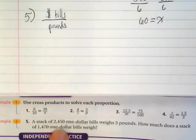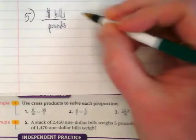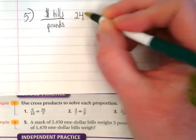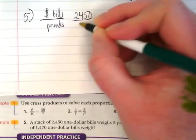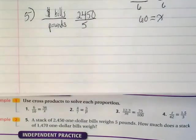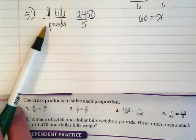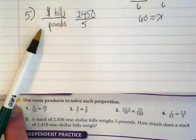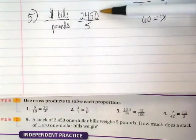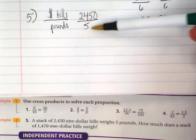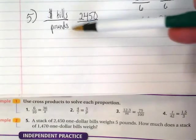You always want to start off with a ratio that has words in it that's telling you how you're going to set this up. So a stack of 2,450 one-dollar bills weighs 5 pounds. How would we write this ratio? And the nice part about having this word ratio is you don't have to keep writing the labels that go with these numbers every single time. We know that any number we put on the top is going to be dollar bills and any number we put on the bottom is going to be pounds.